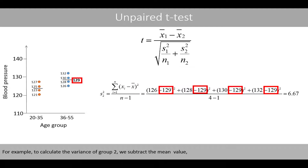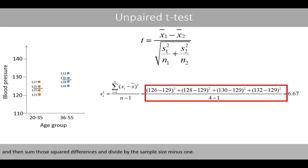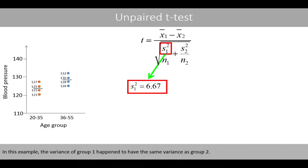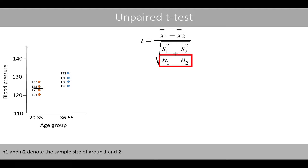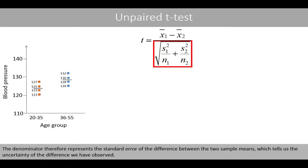For example, to calculate the variance of group 2, we subtract the mean value from each observed value, then square those differences, and sum those squared differences and divide by the sample size minus 1. The variance of group 2 is about 6.67. In this example, the variance of group 1 happens to have the same variance as group 2. n1 and n2 denote the sample size of group 1 and 2. The denominator represents the standard error of the difference between the two sample means, which tells us the uncertainty of the difference we have observed.